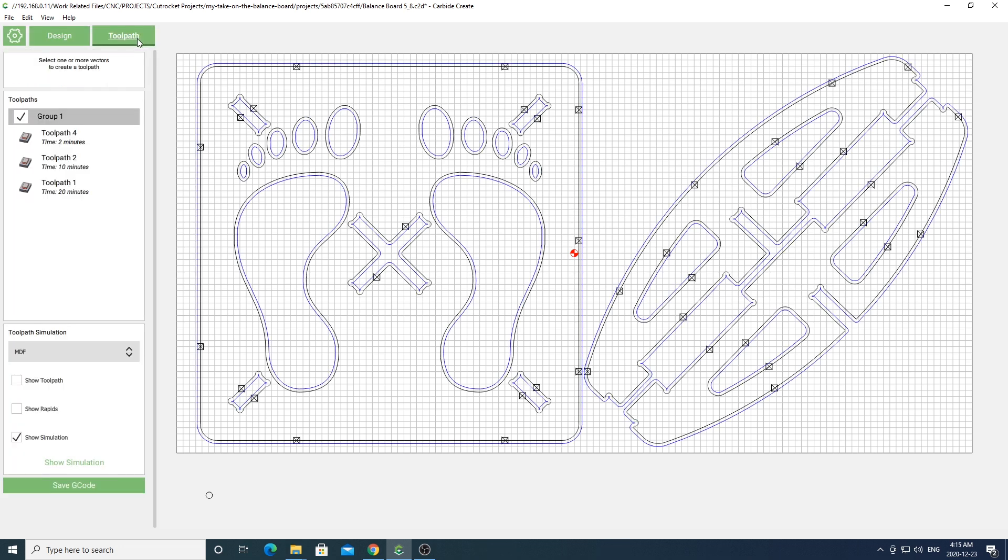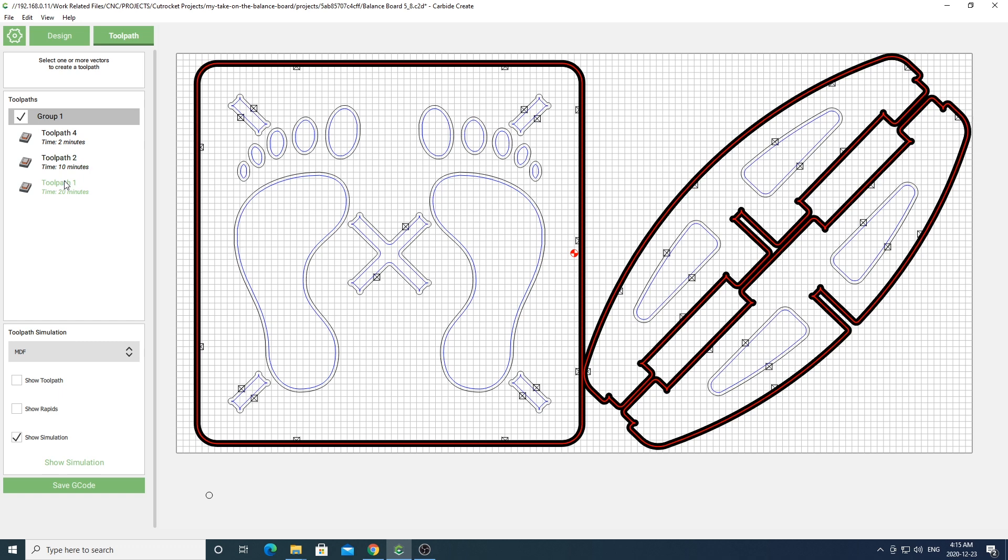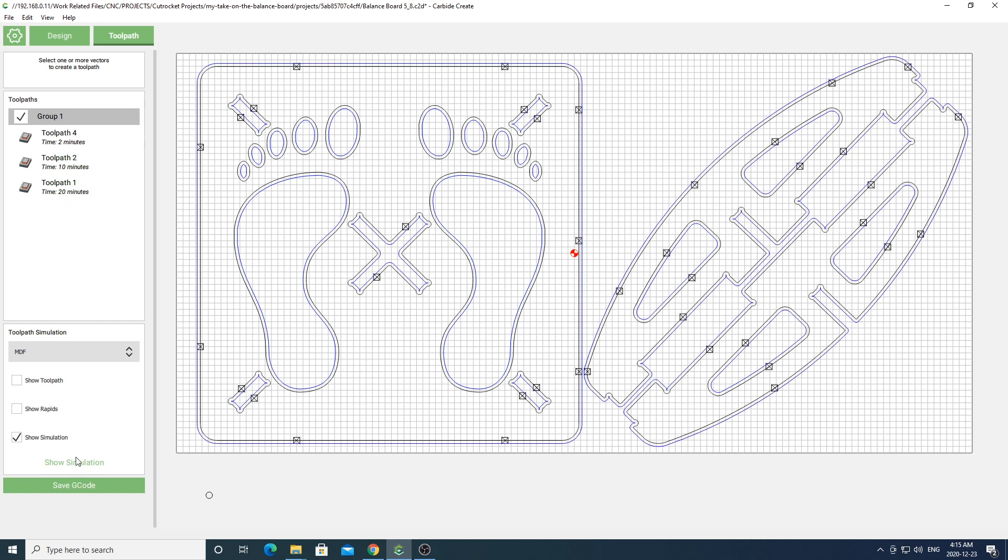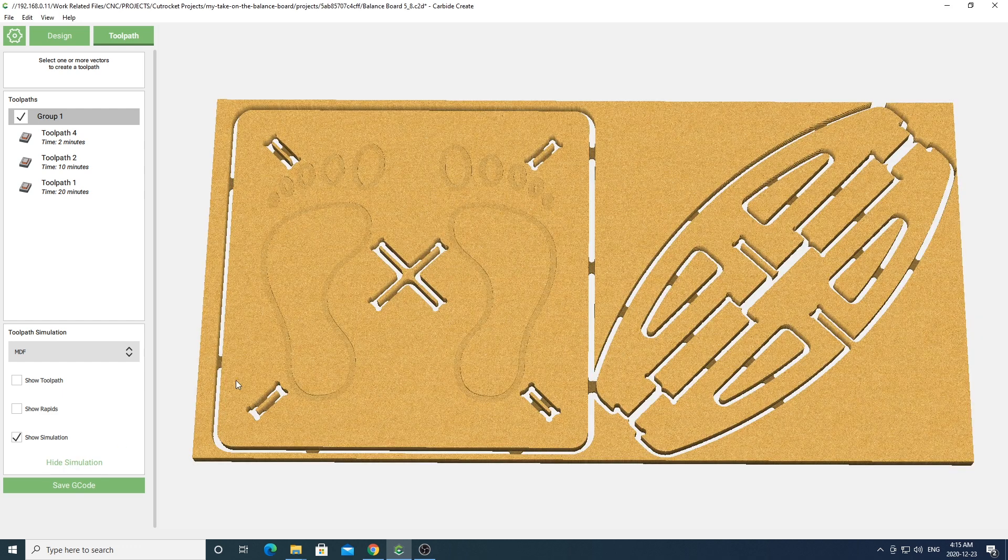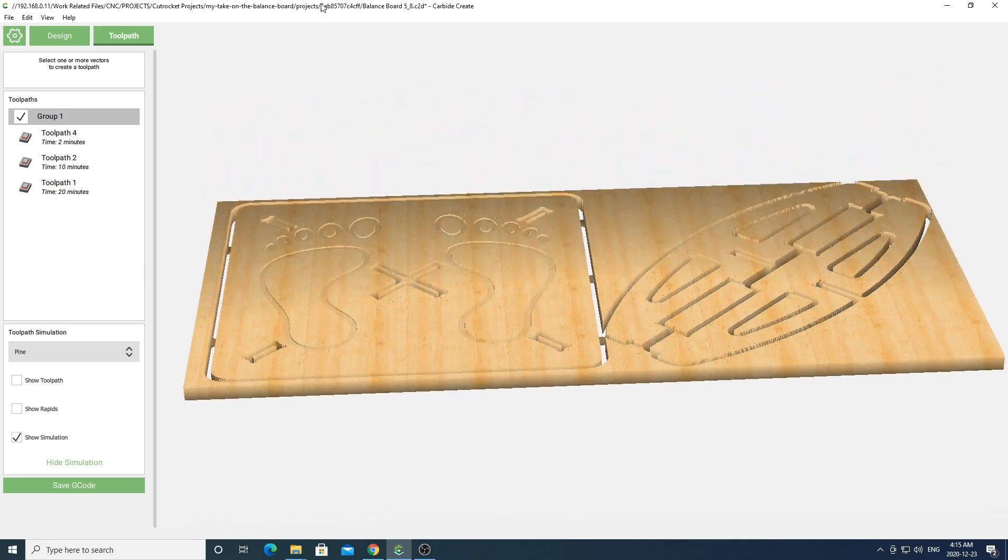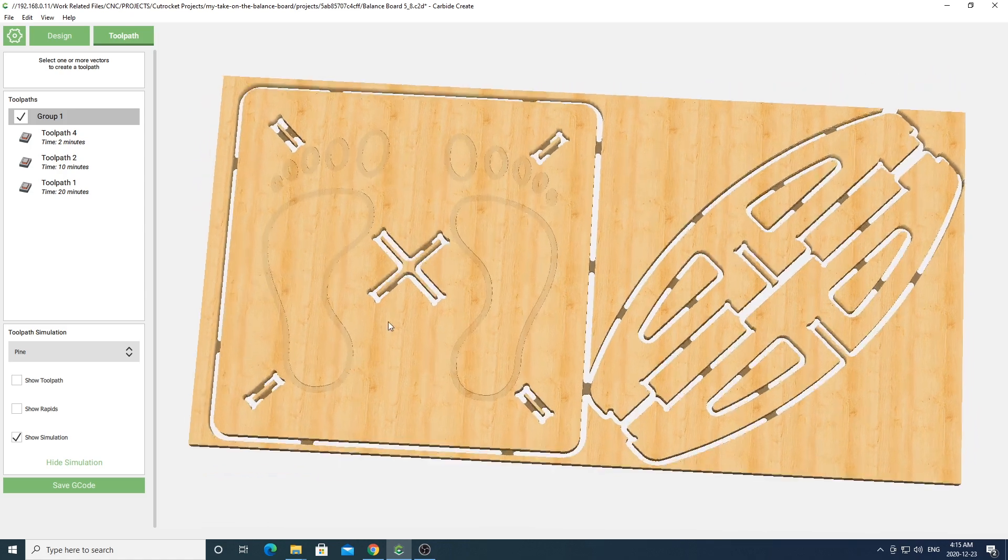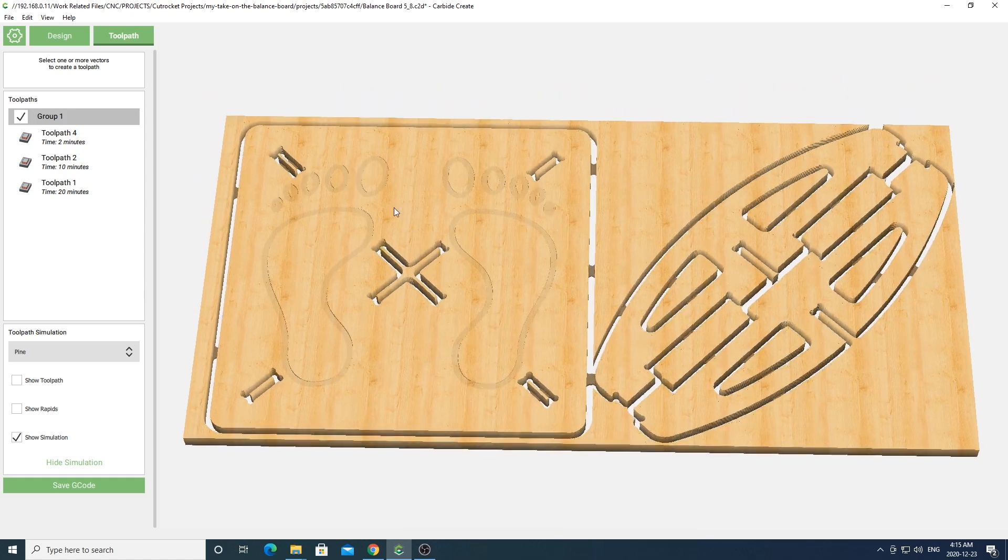In the toolpath area you'll see three toolpaths for this project. The first will be an engraving for the feet. The second will be a cutout for the slots and the third will be an actual cutout of the project itself with tabs. You'll of course have to go change these toolpaths to the material you're using and to the bit you'll be using. If you aren't sure of your feeds and speeds just go ahead and use the defaults that Carbide Create provides for you. Once you're done go ahead and simulate your project and make sure everything looks good.